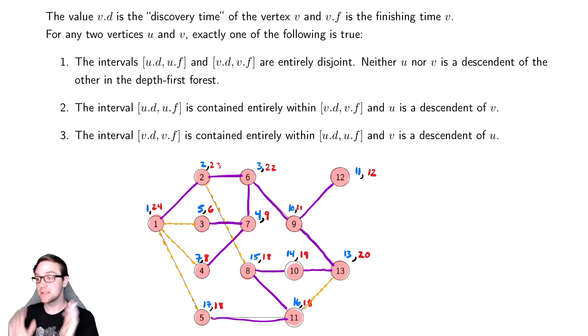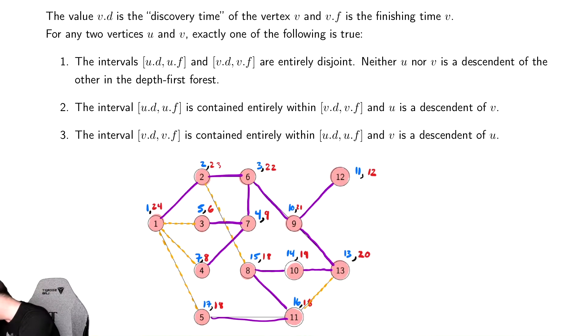So what happens with these discovery times is for a given node like one, all of its children are within the range of those values for their discovery time and for their finishing time. So all the discovery times of the descendants of one are going to be bigger and all the finishing times are going to be smaller.